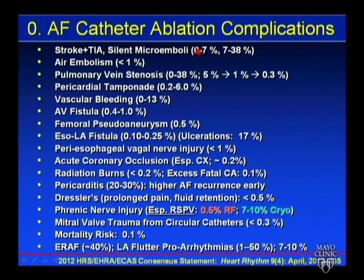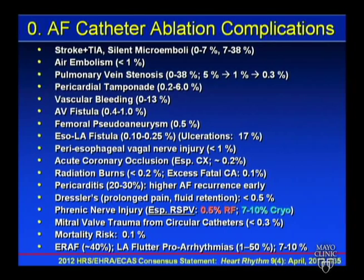Stroke and TIA incidence ranges from 0% to 7%, with an average around half a percent. Doug talked about silent embolic microemboli — anywhere from 7% to 38% incidence on MRI scans. The long-term significance for neurocognitive testing and neurologic function is unknown. These phenomena have been seen after other invasive cardiac procedures including PCI and congenital closure device therapies, so they're not unique to RF or cryoablation.